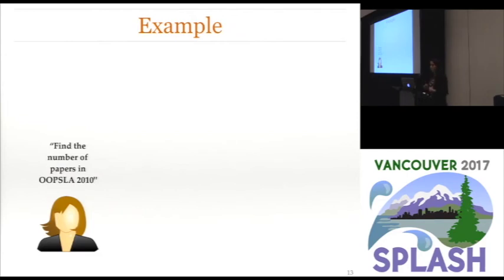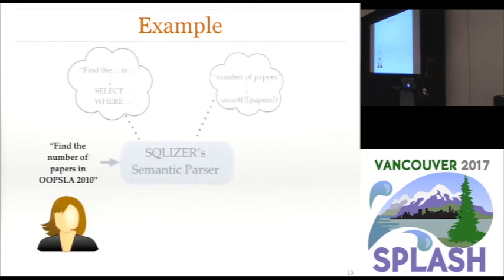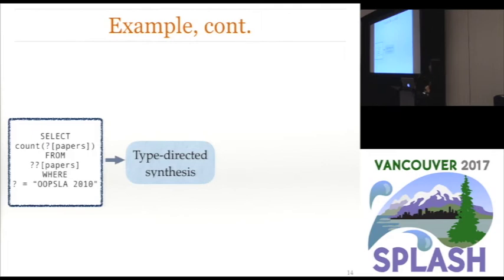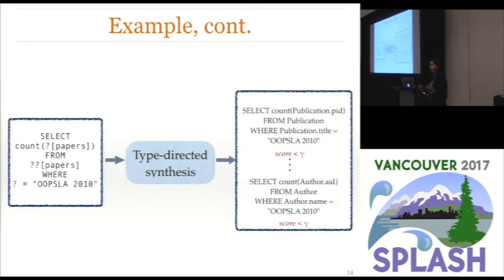Let me walk through a simple example that illustrates how this technique works in practice. Suppose we're working with the Microsoft Academic Search database containing information about publications and conferences, and the user wants to know the number of papers published in OOPSLA 2010. Given this query, we use semantic parsing to generate the query sketches — the sketch we looked at earlier happens to be the highest ranked. Our type-directed synthesis engine tries to fill each hole, but unfortunately none of the completions, even though well-typed, meet our confidence threshold, so we reject the sketch and try to repair it.